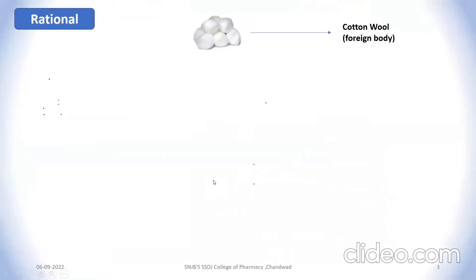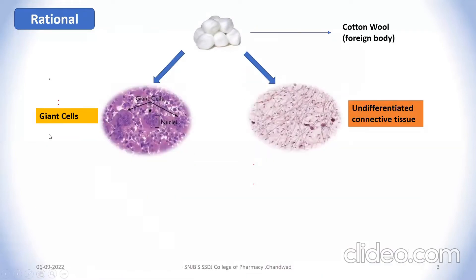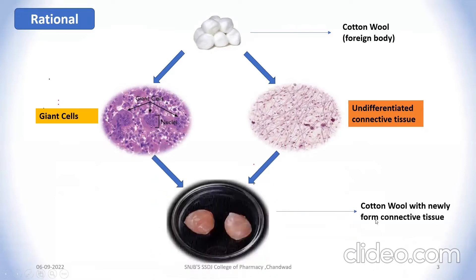So what is the rationale for this study? Whenever we insert anything inside the body, the body considers it as a foreign material and tries to defend against it. In this case we use cotton wool as the foreign body. When it is inserted into the animal's body, the animal's body starts collecting giant cells as well as undifferentiated connective tissue along with fluid infiltration, which accumulates on the cotton wool and increases its weight.